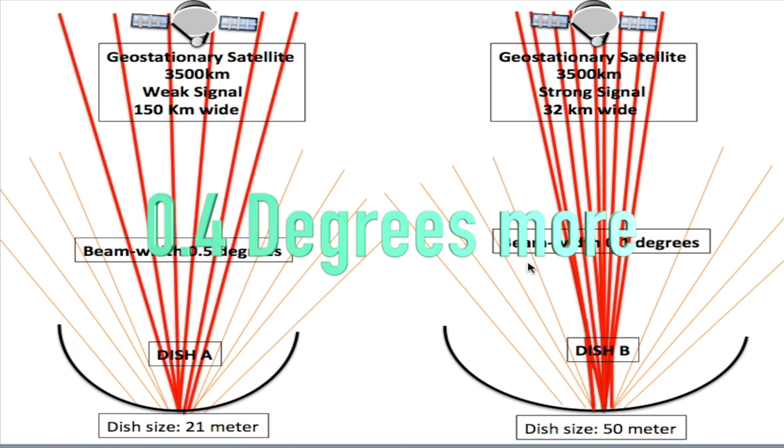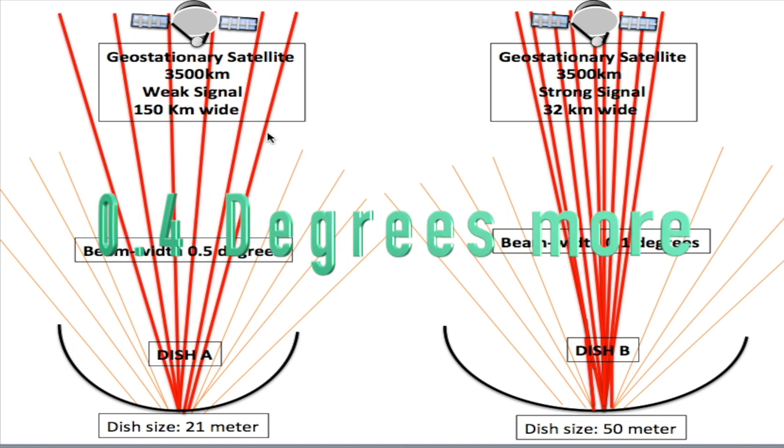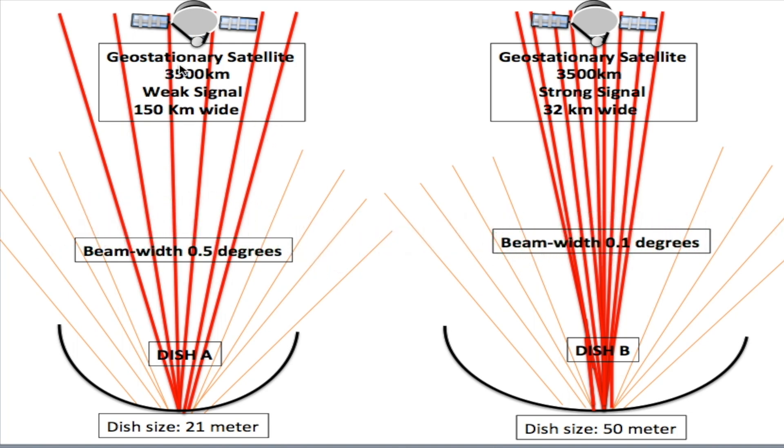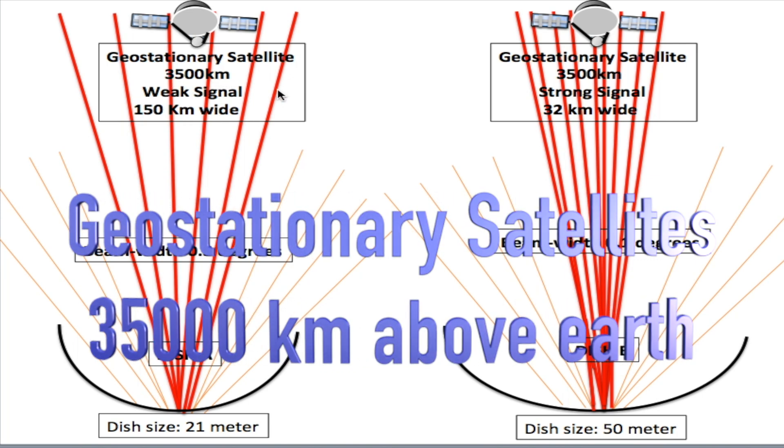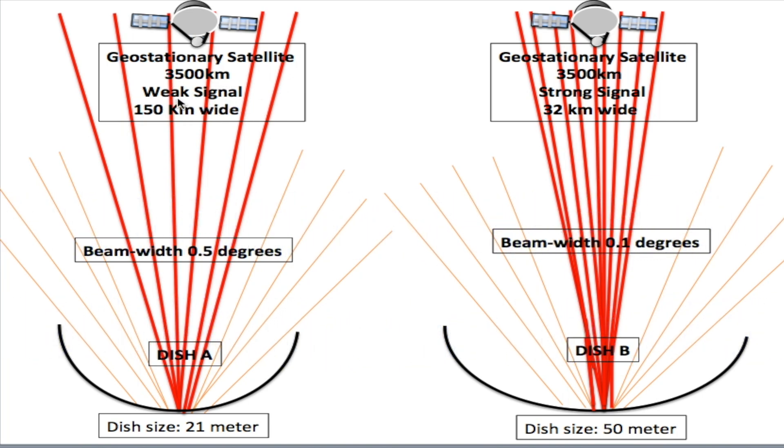By the time they get to the geostationary satellite, which is 35,000 kilometers above Earth, the signal is very weak because the beam width is now 150 kilometers wide, and it was a small dish to begin with.